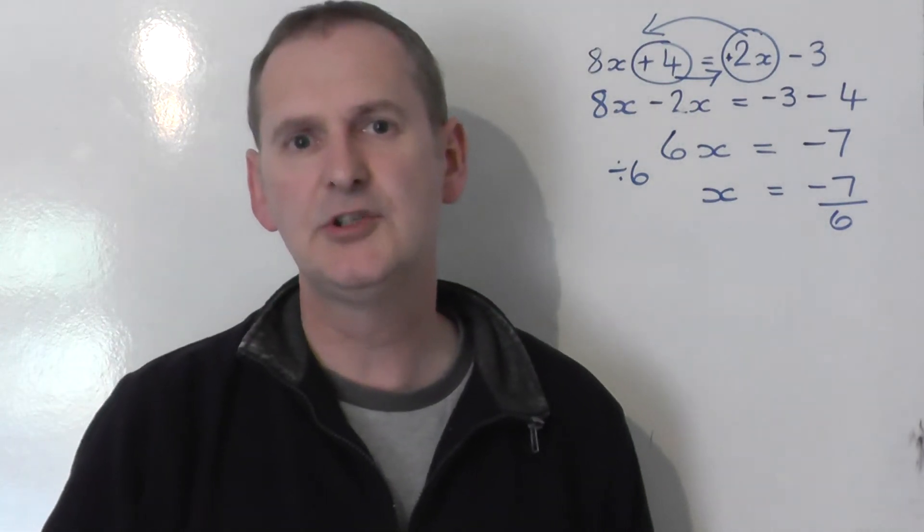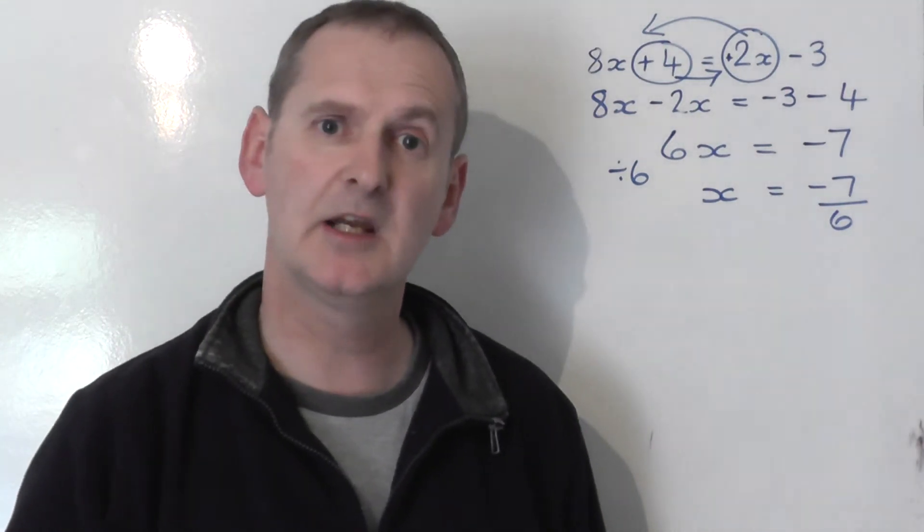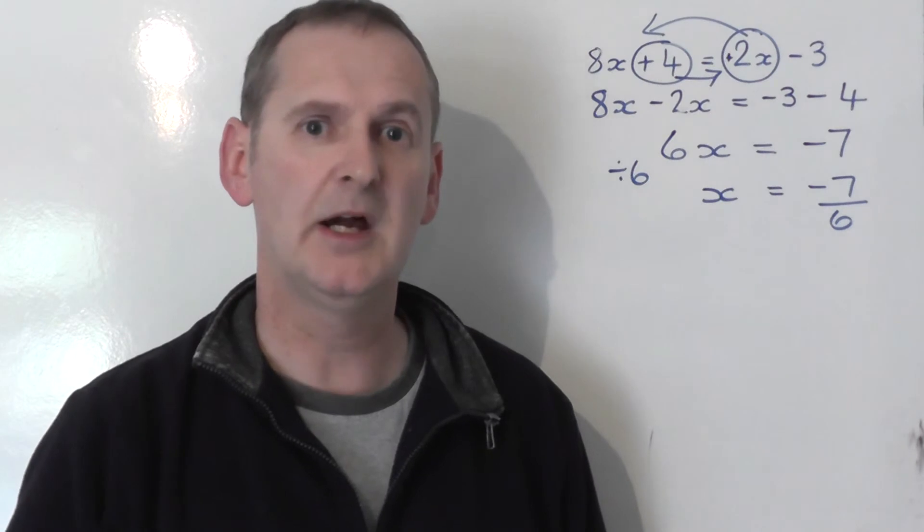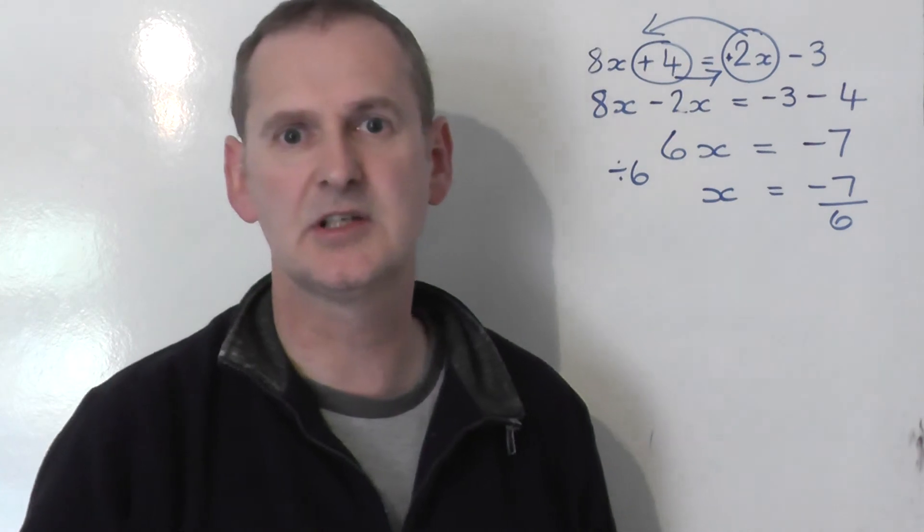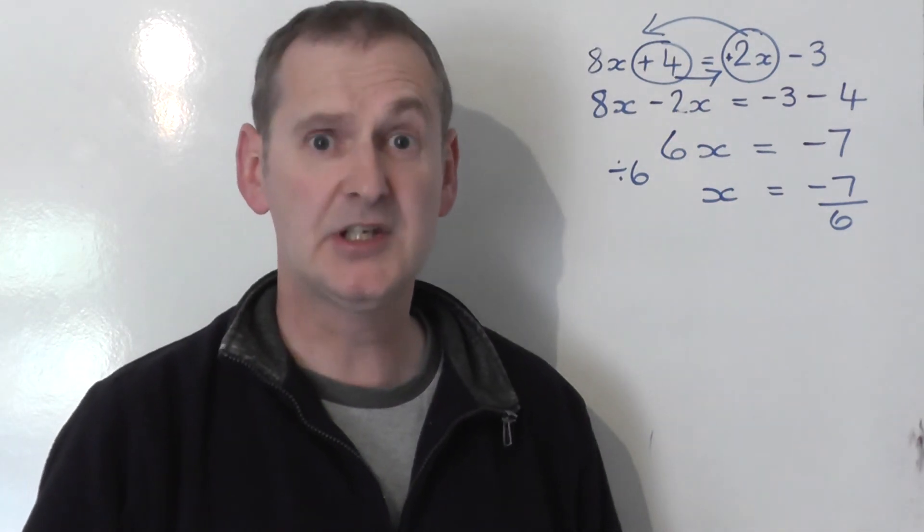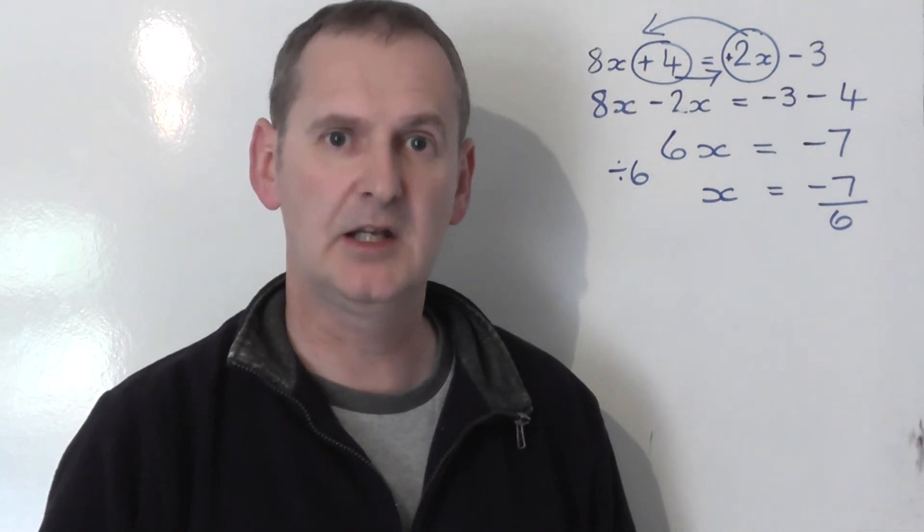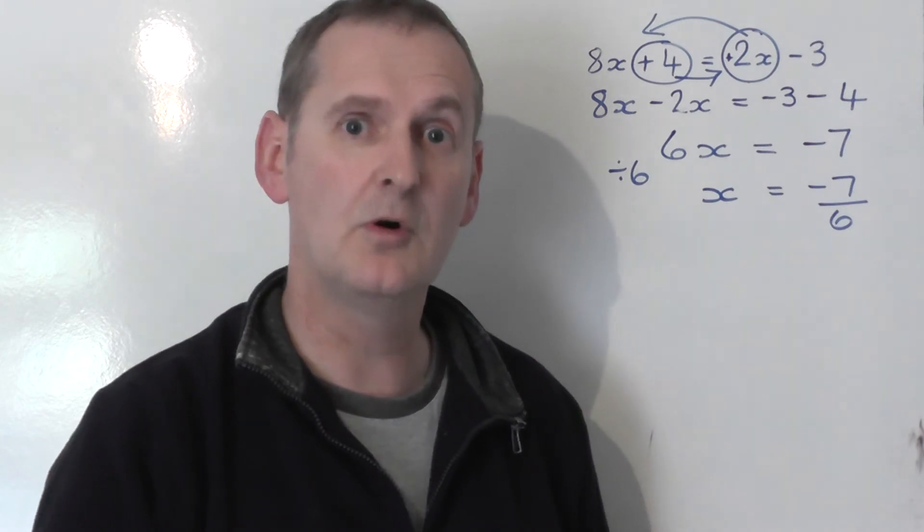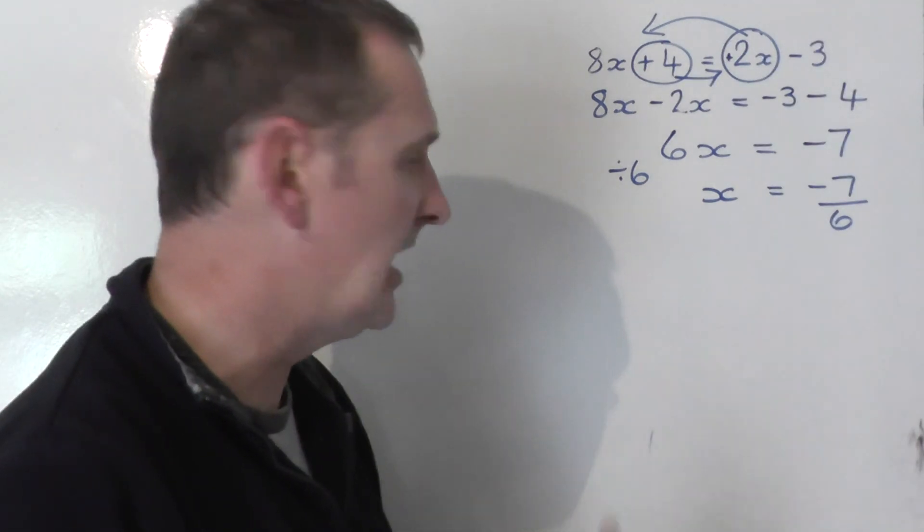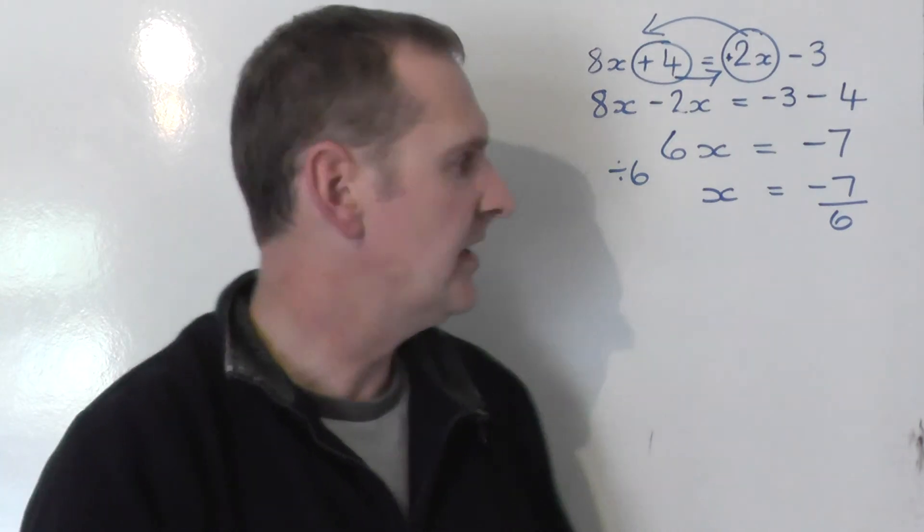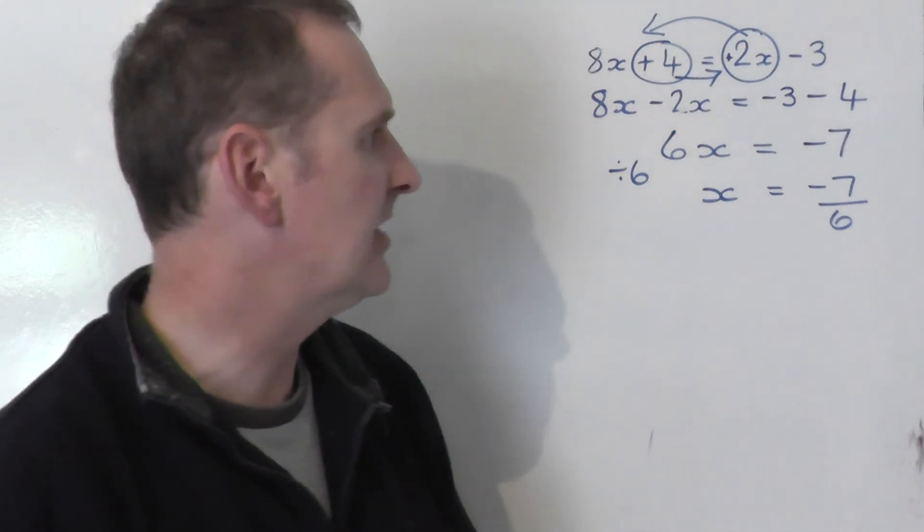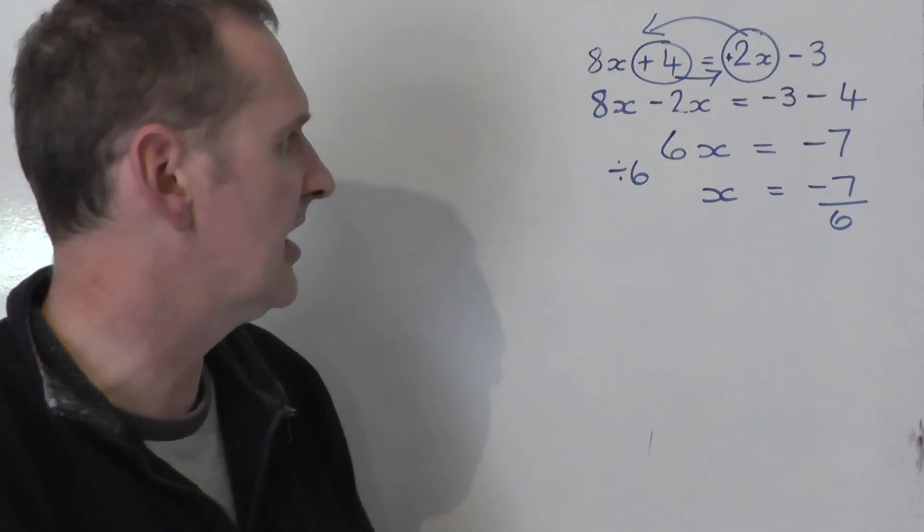Minus 7, share by 6. If you did it on a calculator, it would be an awkward decimal, minus 1.1666666. Personally speaking, I wouldn't even bother with a calculator. I would just leave the answer as an awkward top-heavy fraction, minus 7 sixths. Or if you like, minus 1 and 1 sixths. There's the answer to the equation. x equals minus 7 over 6 is the answer to that equation.